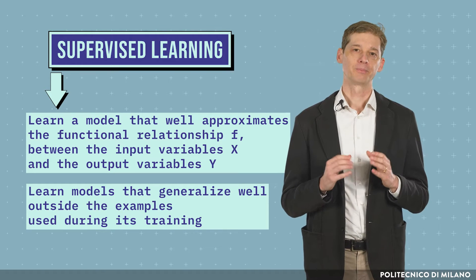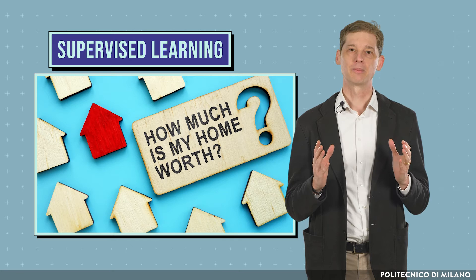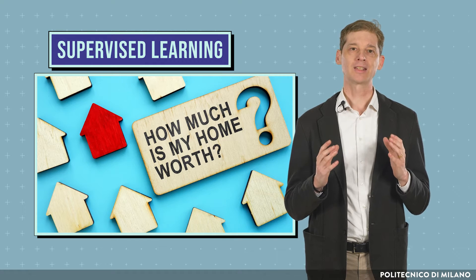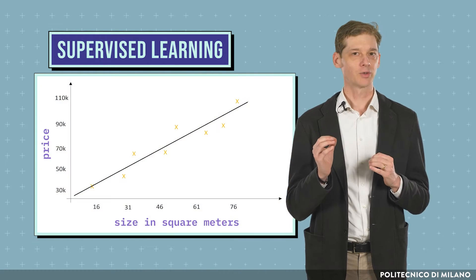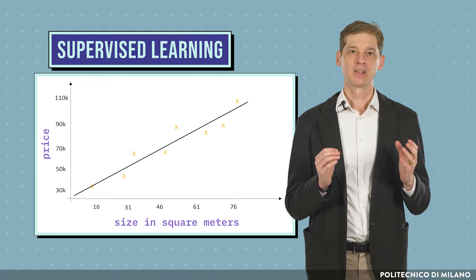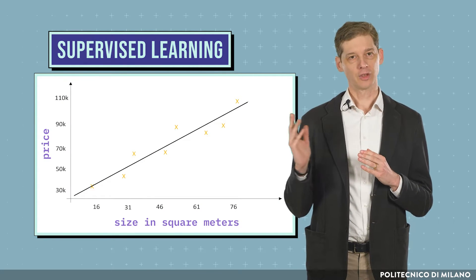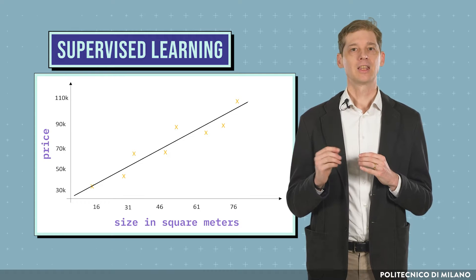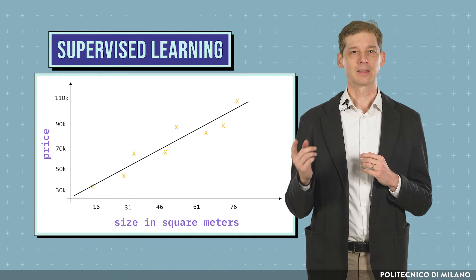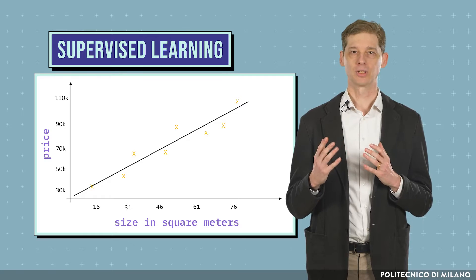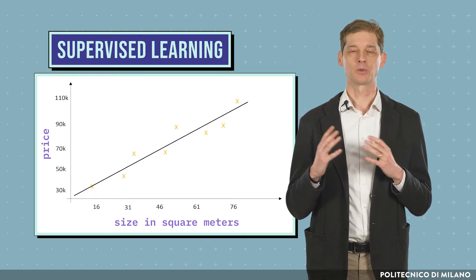For example, in a house price prediction problem, the supervisor could provide a set of examples where the price of each house, which is the output variable, is related to its size. In the figure, the yellow crosses represent the examples, and the black line represents a possible model to explain the relationship between size and price.